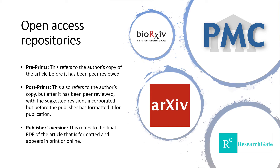There are three basic versions of an article that can be self-archived in repositories. Preprints: this refers to the author's copy of the article before it has been peer-reviewed. Postprints: this also refers to the author's copy, but after it has been peer-reviewed, with the suggested revisions incorporated, but before the publisher has formatted it for publication. And Publisher's Version: this refers to the final PDF of the article that is formatted and appears in print or online.